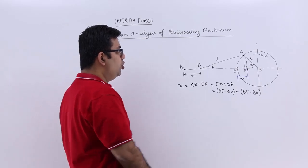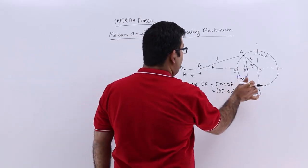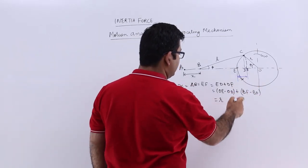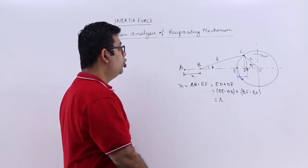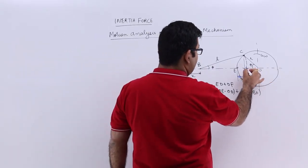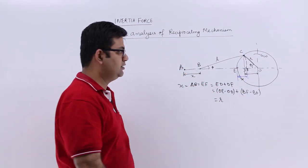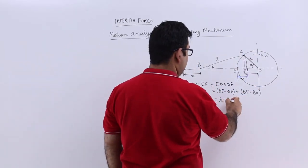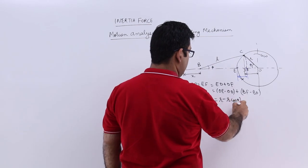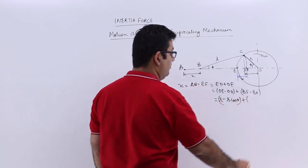Now what is OE equal to? OE is R, that is the radius of the crank circle. OD, this length, this is the cos component of this crank circle radius. So this becomes R minus R cos theta.